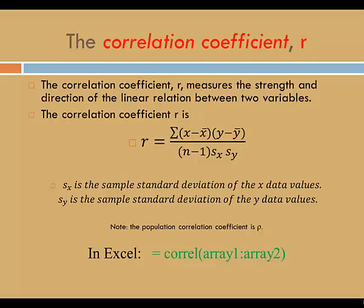The formula for the correlation coefficient is pretty complicated. You need to calculate the deviations in your explanatory variable and the deviations in your response variable, multiply those together, add them all up, and then divide by a product. The denominator includes S sub X and S sub Y. S sub X is the sample standard deviation of the X data values, and S sub Y is the sample standard deviation of the Y data values.